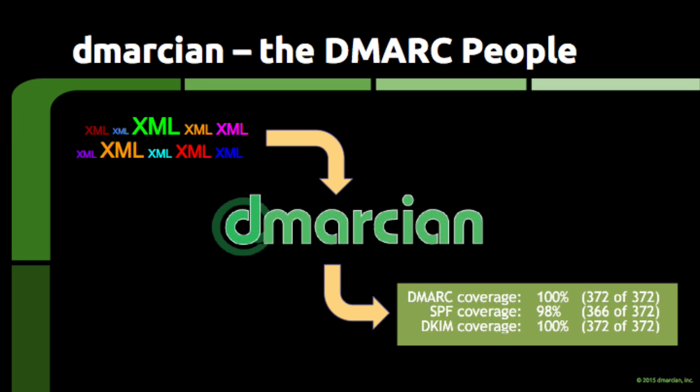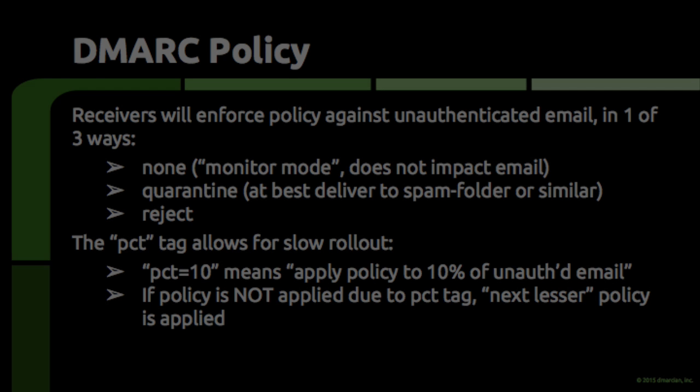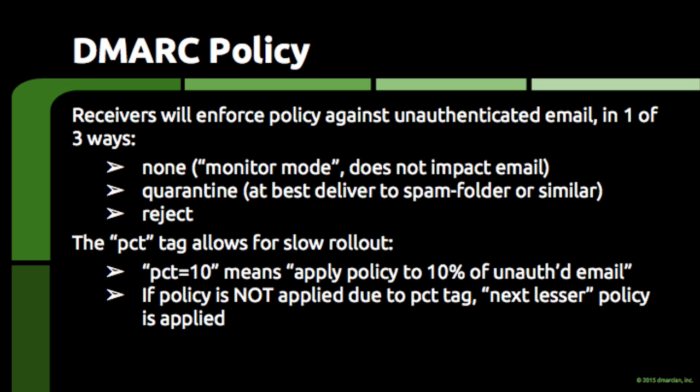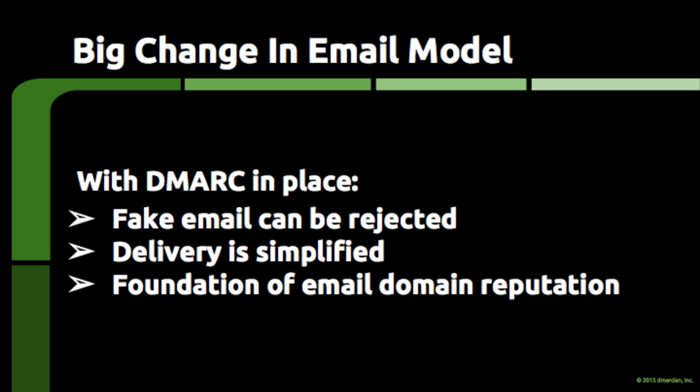Once an email domain owner is confident that they've deployed SPF and DKIM across all their email streams, the domain owner can then tell the world to act against email that is not compliant with DMARC. The policy the domain owner can publish is to either quarantine or reject email. Quarantine usually means to spam-folder email that fails the DMARC check, but if an operator doesn't implement a traditional spam folder, they might turn up the aggressiveness of spam filtering. Reject means to block outright any email that fails the DMARC check. Domain owners usually strive to get to the reject policy, as doing so disallows unauthorized use of the domain, which ends up being a pretty strong anti-phishing measure.